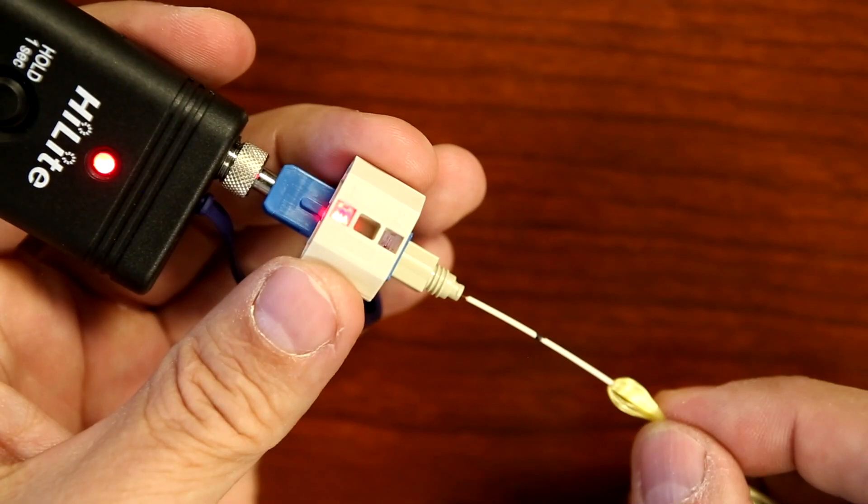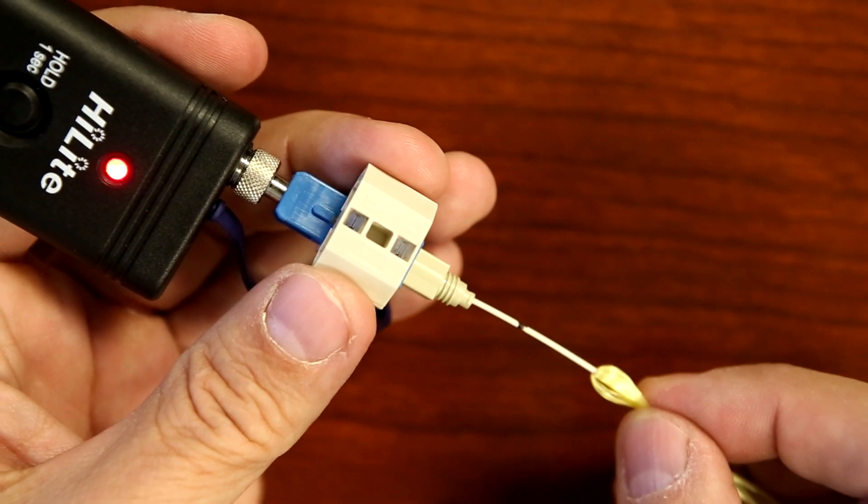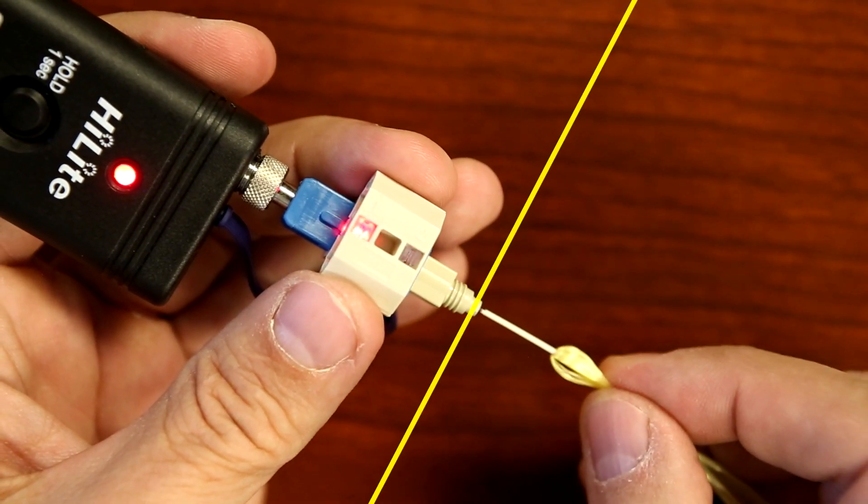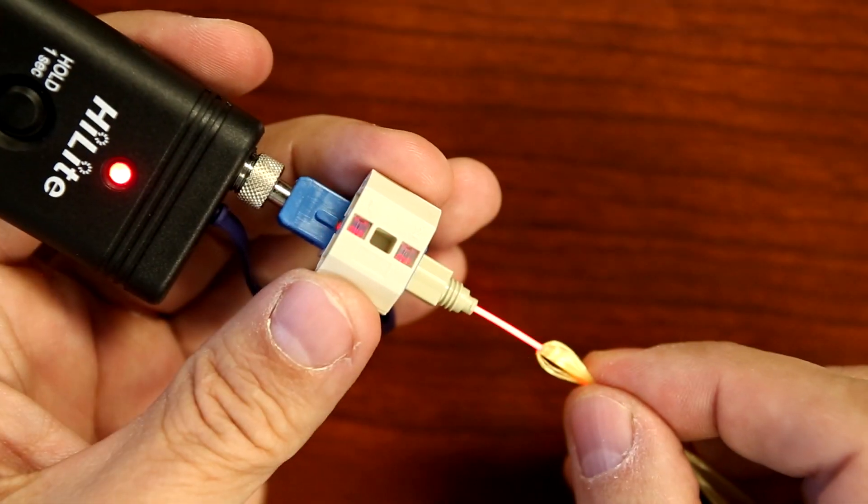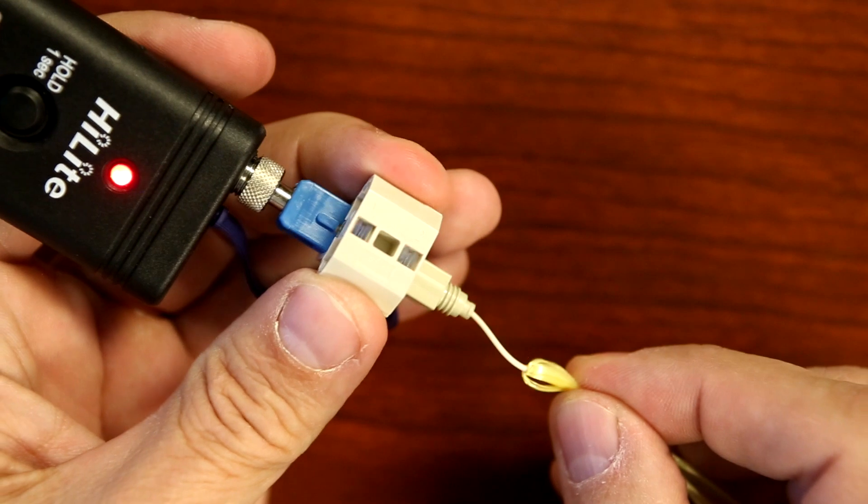Insert the cleaved fiber into the rear of the connector until the mark on the fiber aligns with the rear edge of the connector and the wedge clip's red glow dims. Push the fiber toward the connector to make a slight bend.